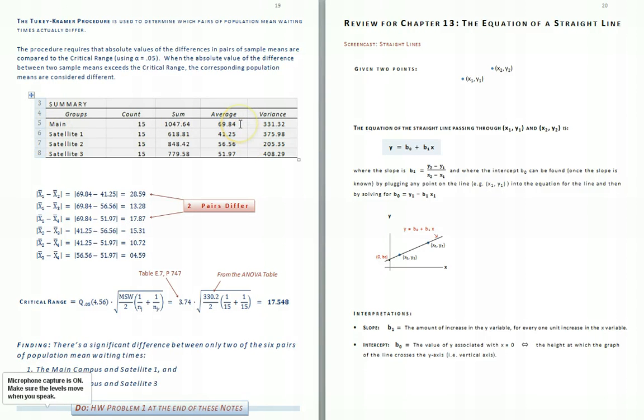So we begin by taking the 69.84 from the main campus, subtracting off the 41.25 minutes from the satellite one, and taking that absolute value will get 28.59 minutes, and then the main campus minus satellite two.